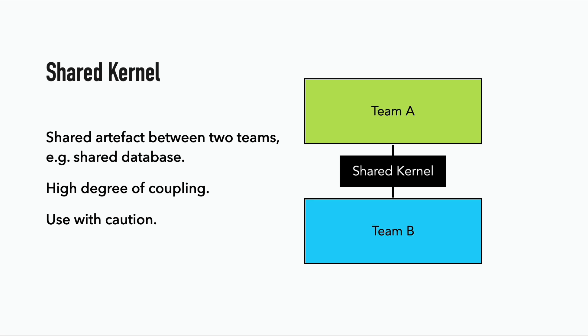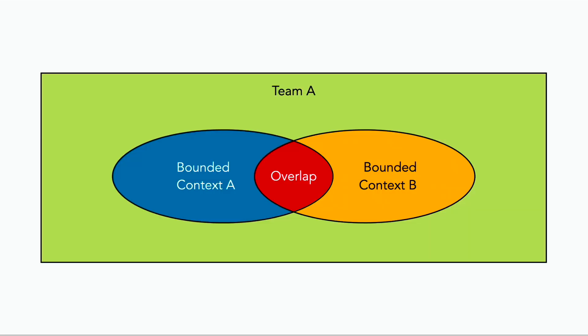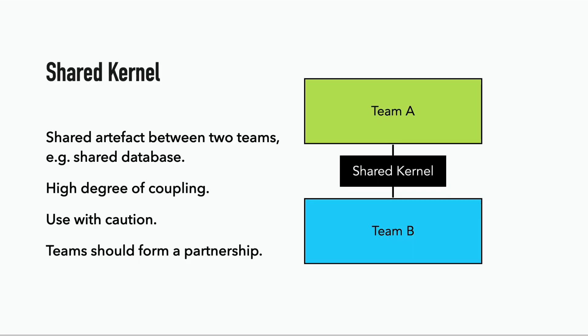There are some cases where shared kernel can work really well — for example, when a team is responsible for two bounded contexts and there is some overlap between these two in terms of the language. But typically, when you have two teams with shared kernels, they should really form a partnership instead.